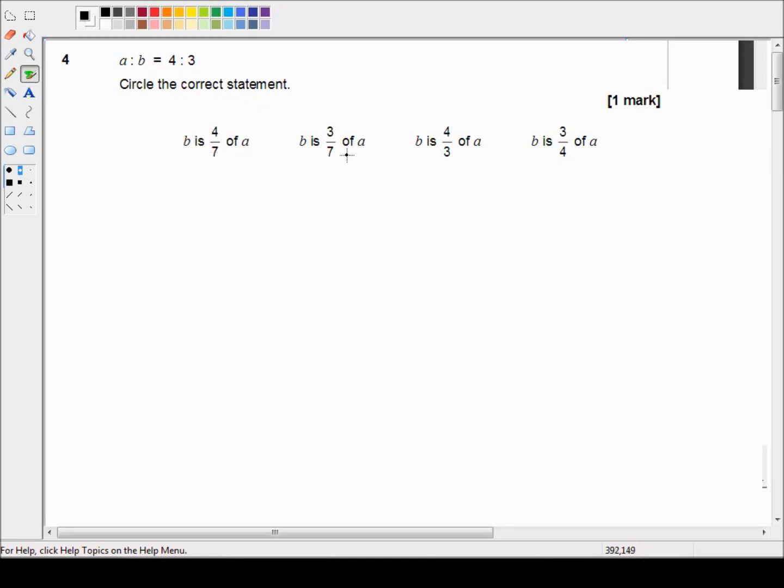B is 4 sevenths of A, B is 3 sevenths of A, B is 4 thirds of A, or B is 3 quarters of A.